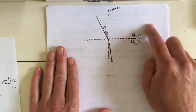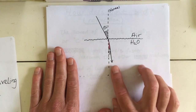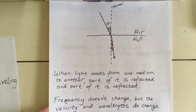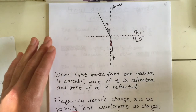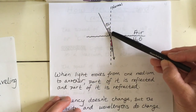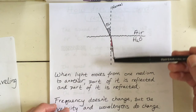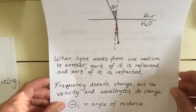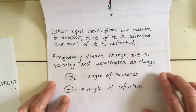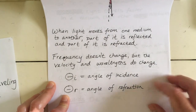When light went from air to water — from a less dense medium to a more dense medium — it bent towards the normal upon entering the water. When light moves from one medium to another, part of it is reflected and part is refracted. Theta-i and theta-r here are angle of incidence and angle of refraction — not reflection. The key rule: when light speeds up, it bends away from the normal; when light slows down, it bends towards the normal.